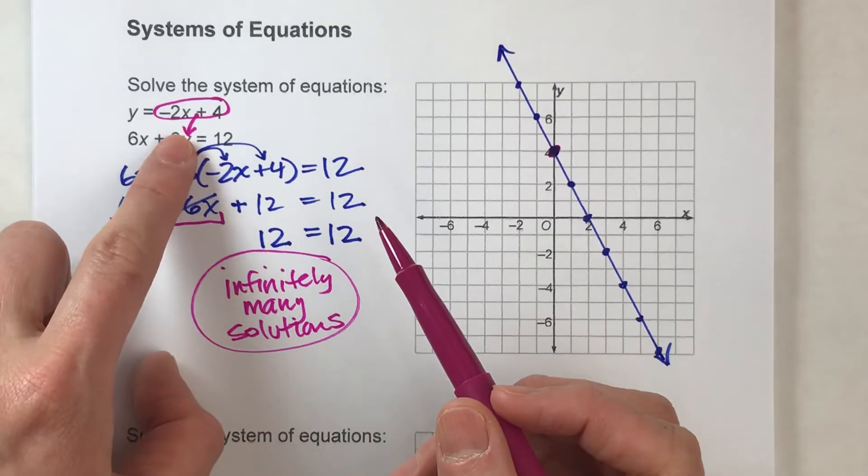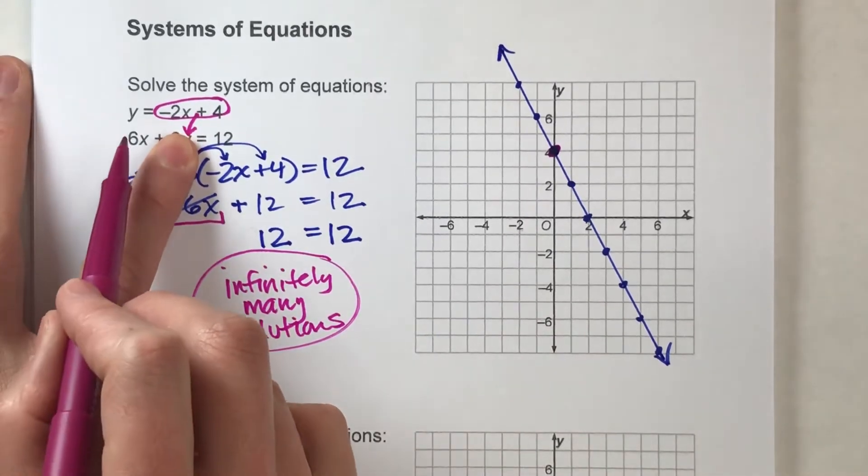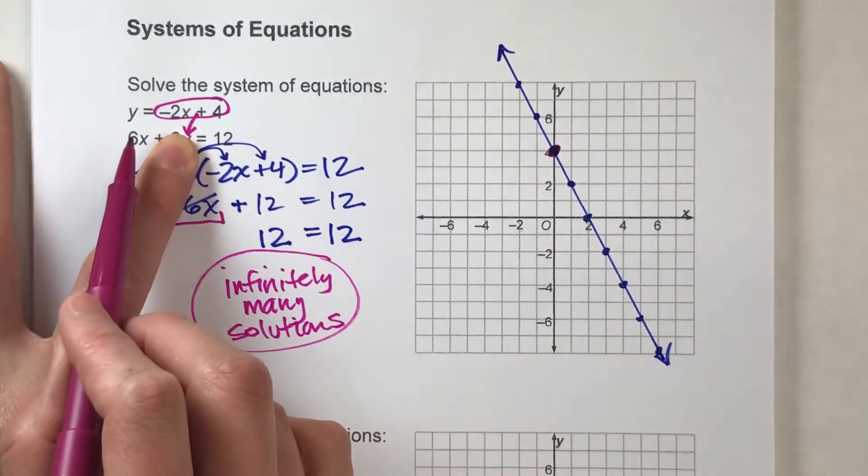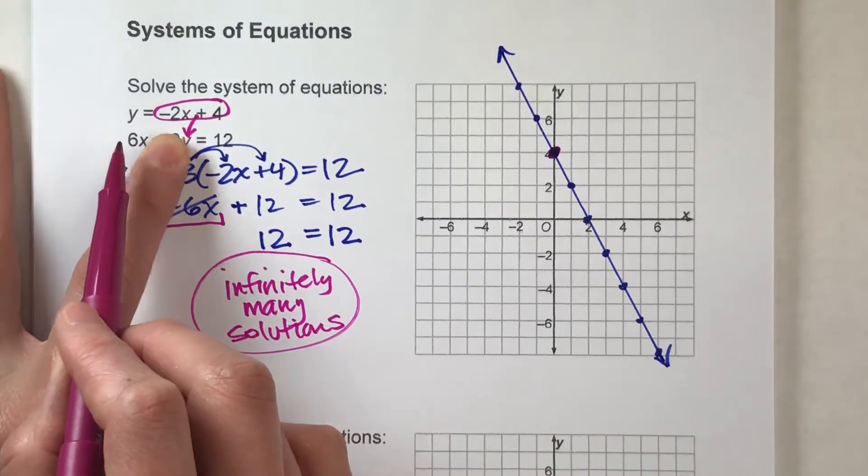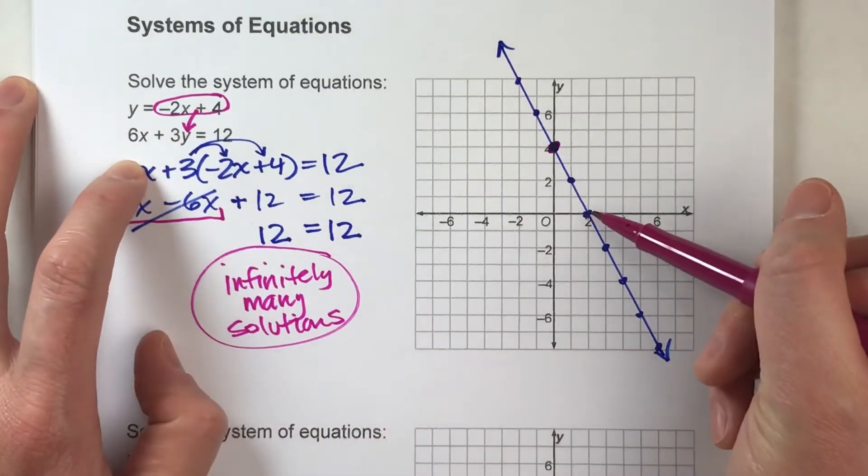Now if y is 0, what does x have to be so that 6 times x equals 12? x has to be 2. So 2, 0 is another point on my line.